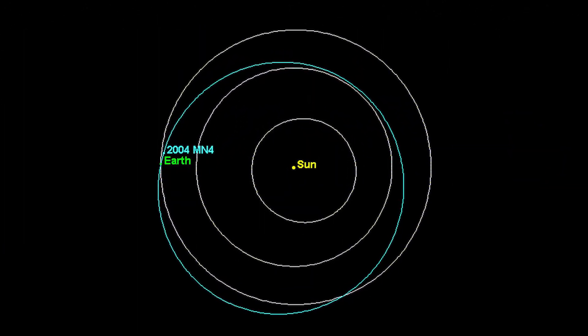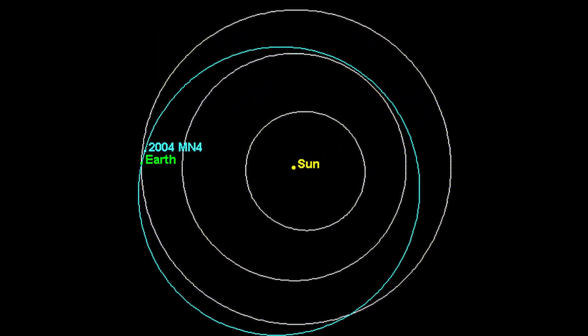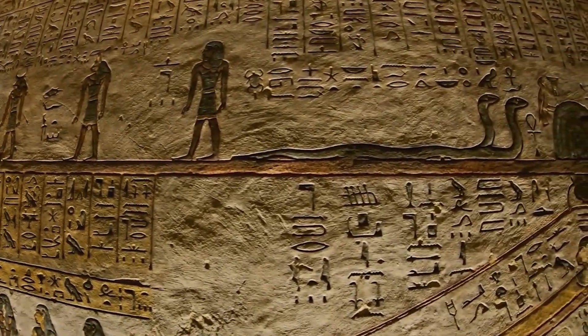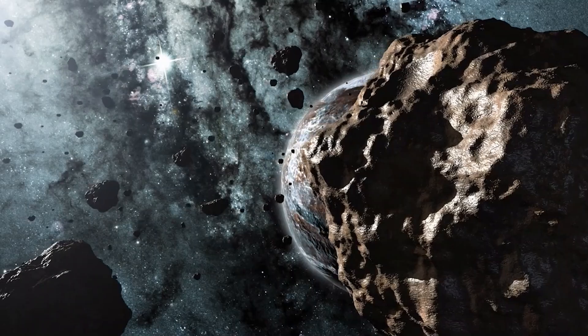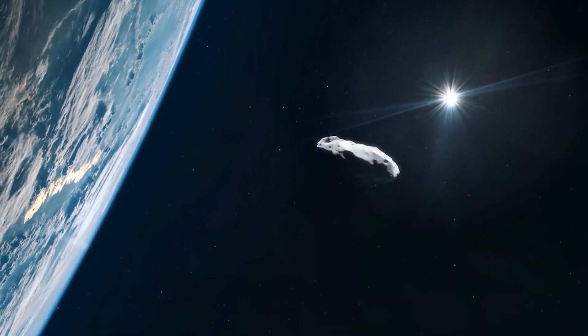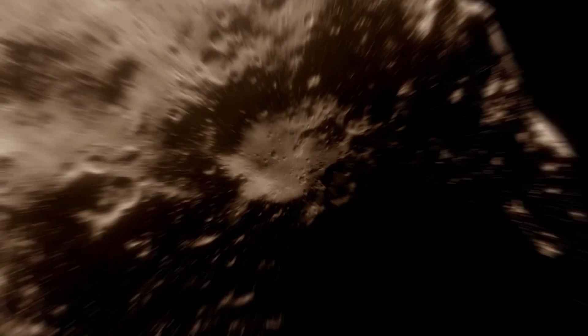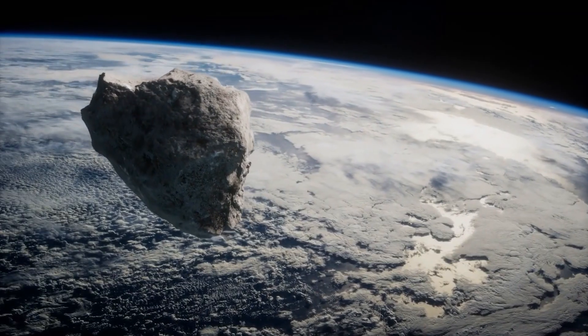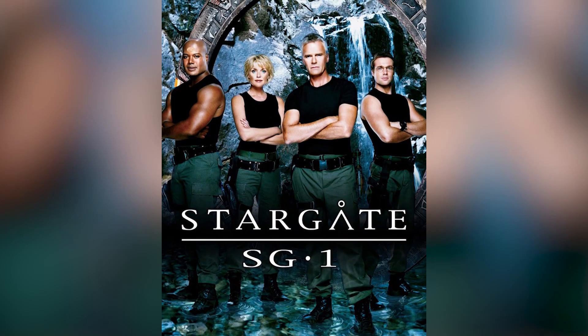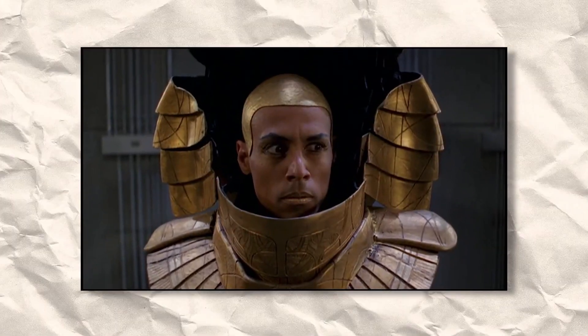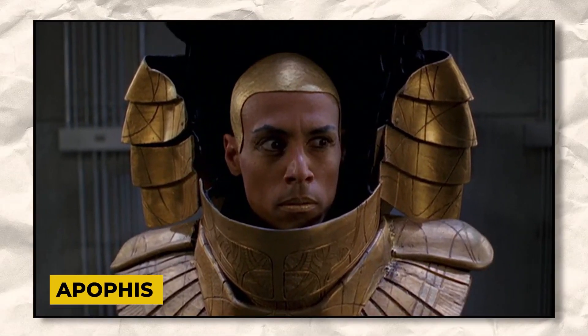Despite its ominous designation as 2004 MN4 and its later name Apophis, inspired by a demon from Egyptian mythology, further investigation may shed light on its properties and behavior. The discovery of Apophis was made by Dave Follin and Roy Tucker, both avid fans of the science fiction series Stargate SG-1, which featured a character named Apophis as a prominent antagonist.